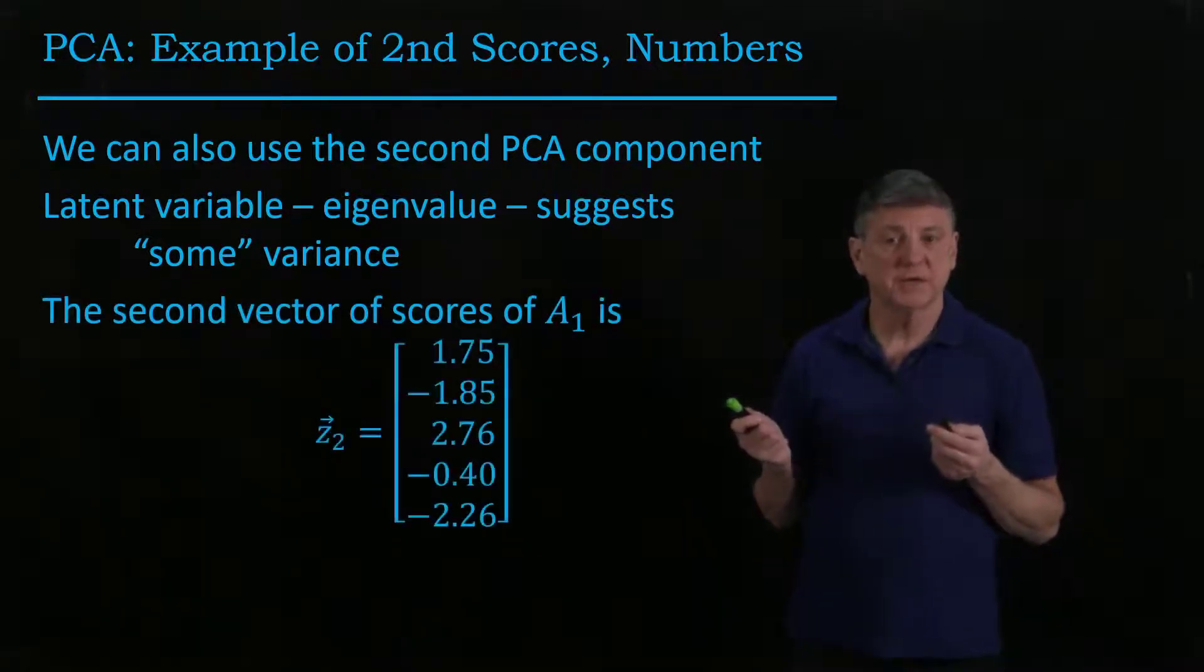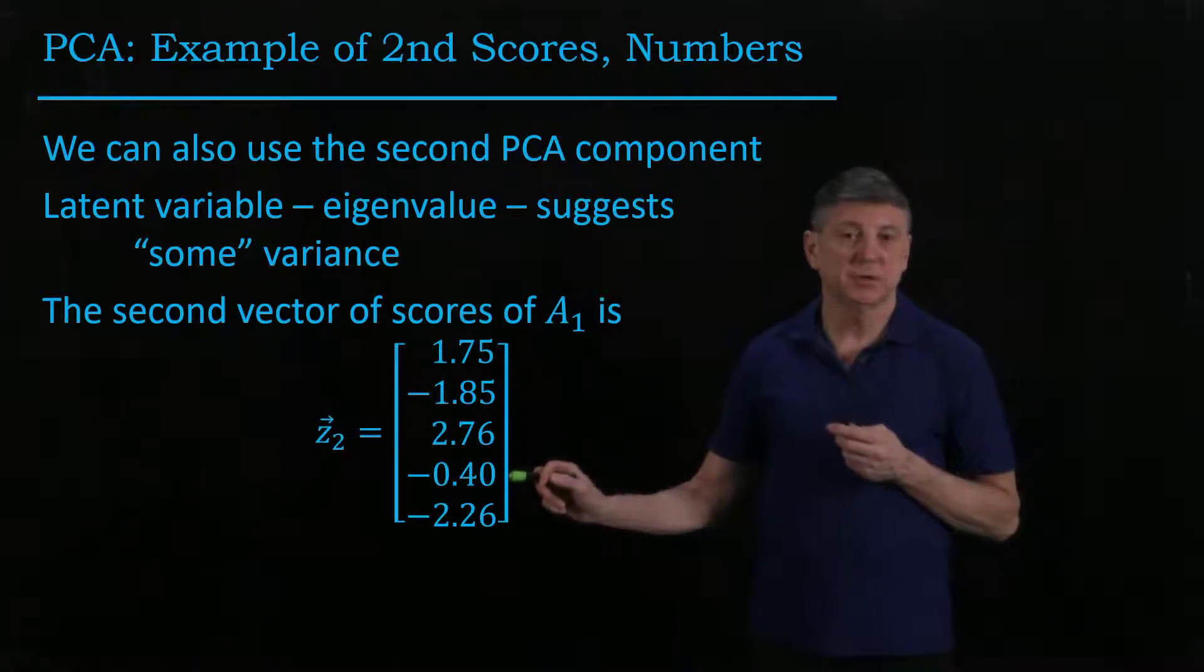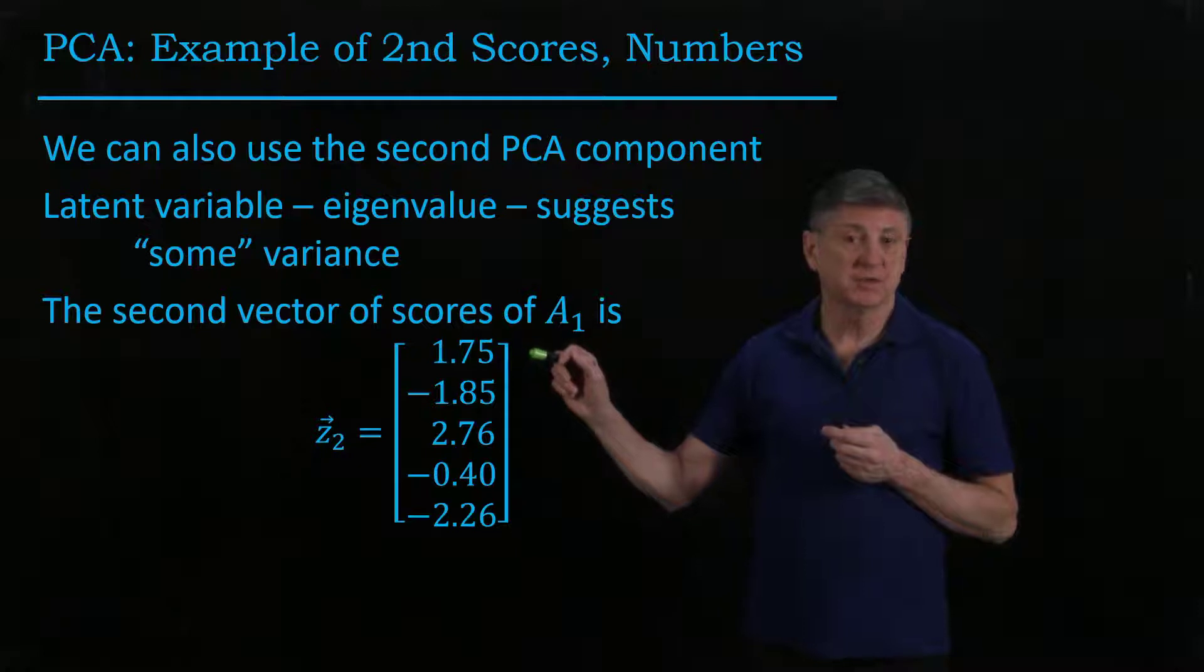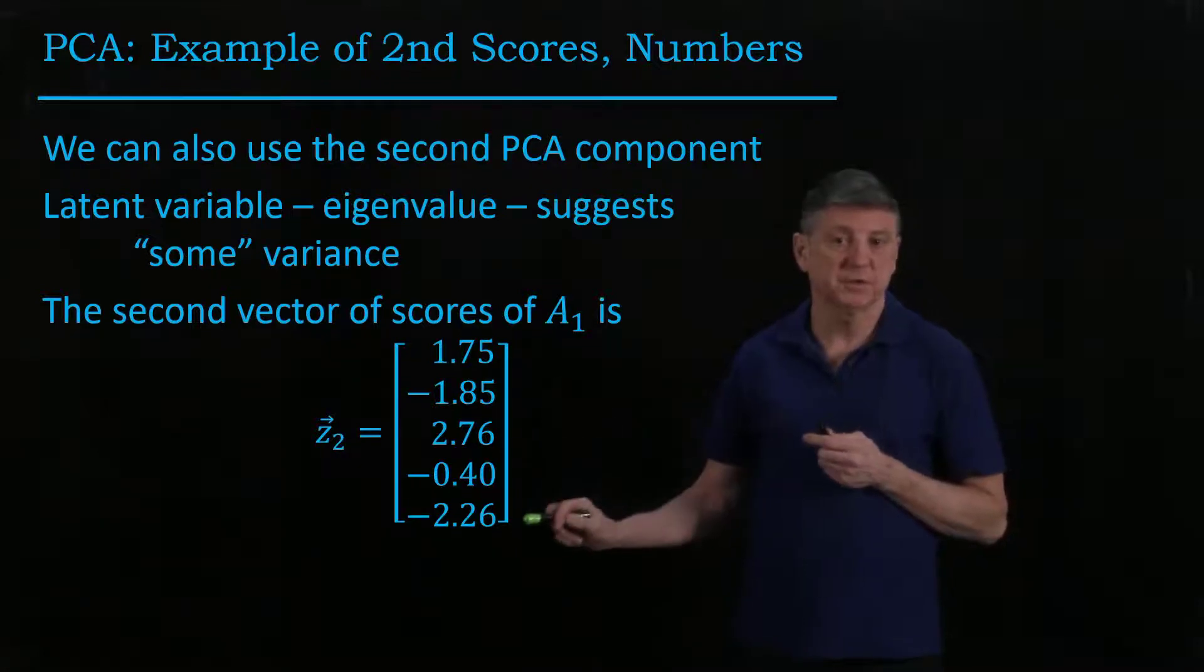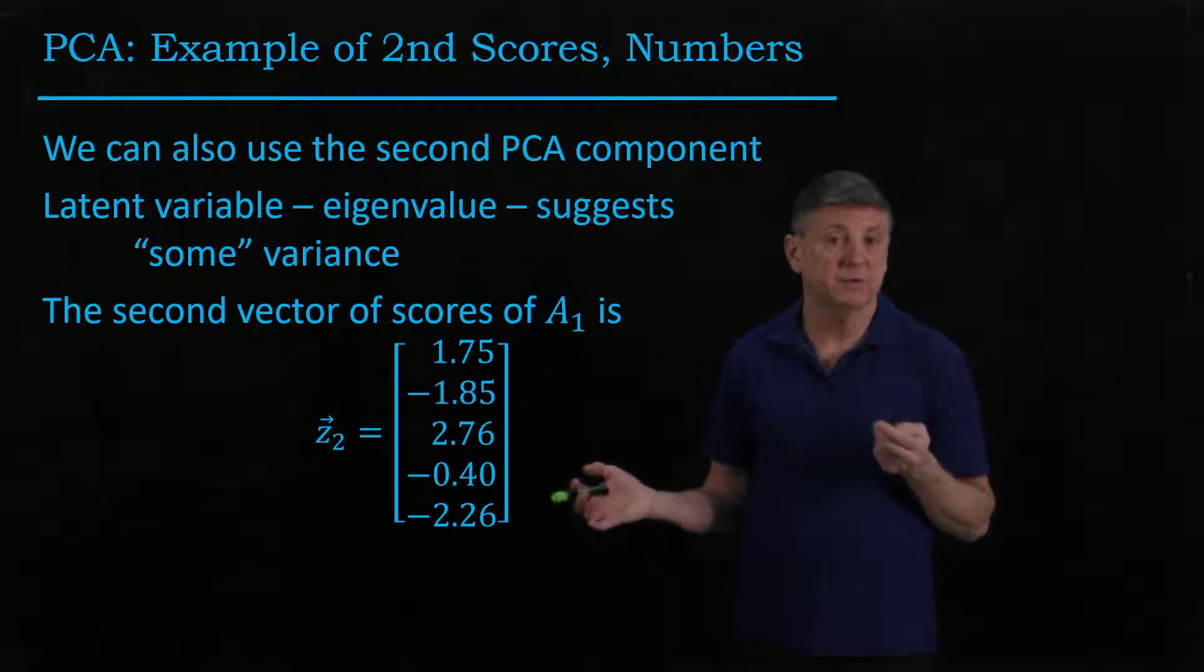When we do the computation, we see that one number is close to zero, then there are two numbers slightly positive and two slightly negative. This is not nearly as compelling a pattern as we found in the first score.